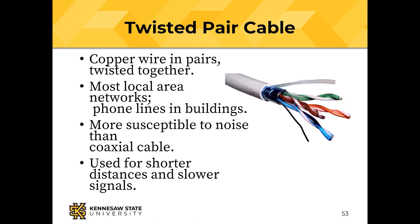Different colored pairs in a twisted pair cable have different amounts of twist per foot, minimizing interference between pairs. Category 5 and Category 6 are common types. Category 5 has more twists per inch than a phone cable — more copper, but less susceptible to noise. Twisted pair is used in local networks and phone lines, for short distances within a building.